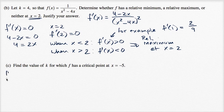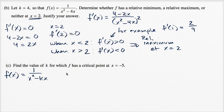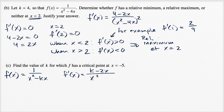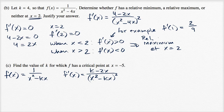So f(x) is equal to one over x squared minus kx, and f'(x) is equal to k minus two x, over x squared minus kx, whole quantity squared. We want to find the value of k for which f has a critical point at x equals negative five.